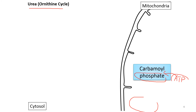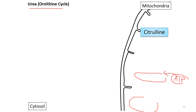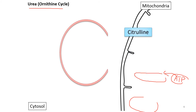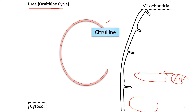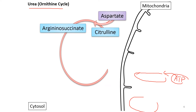Carbamoyl phosphate then combines with ornithine to form citrulline, which is transported out of the mitochondria into the cytosol. Note that both citrulline and ornithine are amino acids but are not used in making proteins. In the cytosol, citrulline reacts with aspartate forming argininosuccinate.